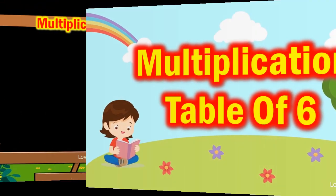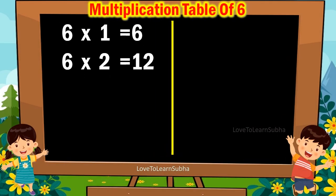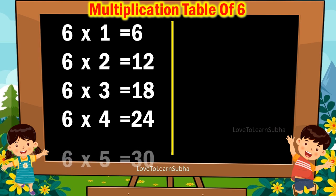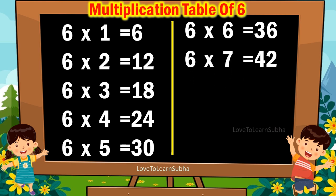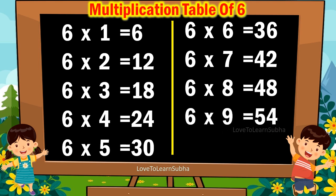6 1s are 6. 6 2s are 12. 6 3s are 18. 6 4s are 24. 6 5s are 30. 6 6s are 36. 6 7s are 42. 6 8s are 48. 6 9s are 54.